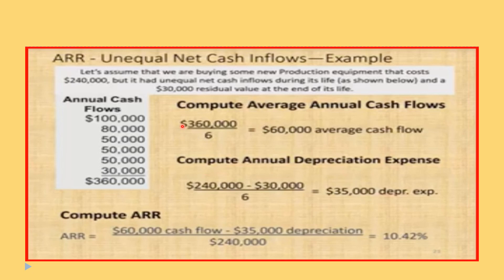Next, compute the annual depreciation expense. This is one of those questions where you are given cash flows and need to find the operating income by subtracting depreciation. The depreciation is calculated as: 240,000 minus the residual value of 30,000, divided by 6 years, which equals 35,000 depreciation expense.